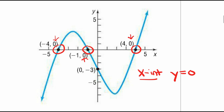Now if we look at the y-intercept, there's one place where this graph crosses the y-axis. Notice that the x value is equal to zero — any value you pick on the y-axis, the x value is always going to be equal to zero. That's always true for a y-intercept.